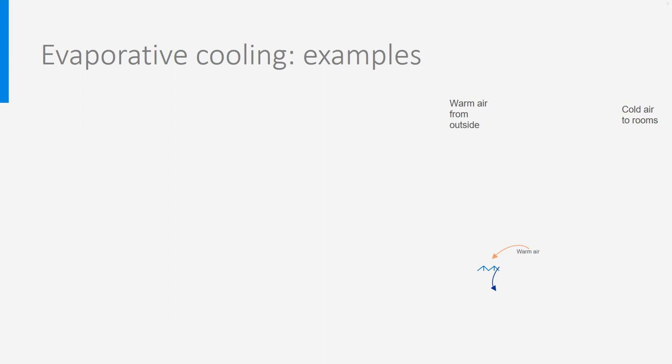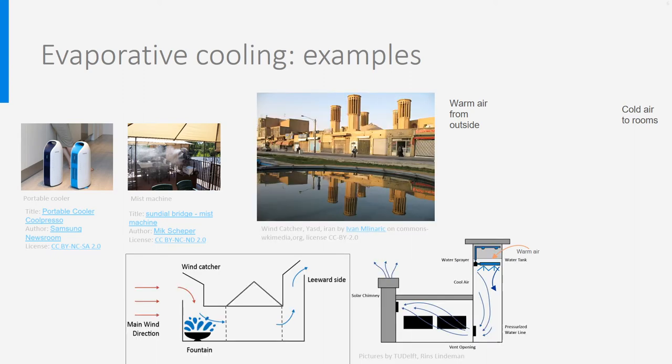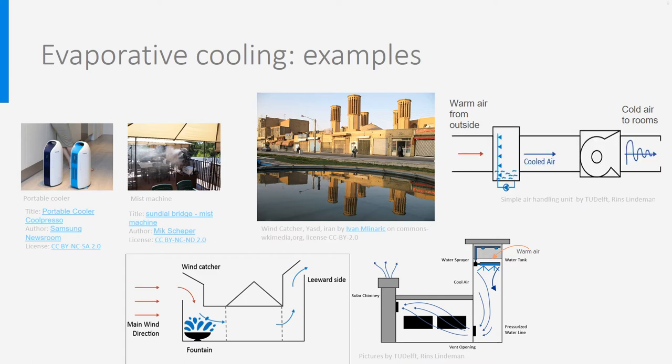You see here a few examples of evaporative cooling. Left a very simple, not very effective home system, with just a water container and a small fan. Then, a mist machine, often used outdoor to cool a bit hot warm outdoor air. Then, in the middle, a picture of a wind catcher in Iran. When used in combination with a fountain or a spray, see both figures below, it is quite effective in cooling warm, dry air. The last picture shows how it looks like in a simple air handling unit. The air is forced along the sprayers and is cooled this way.